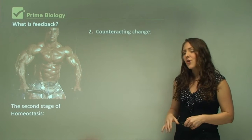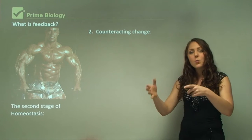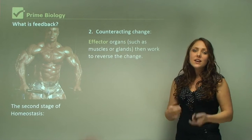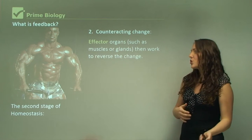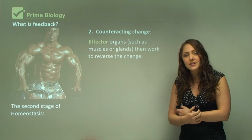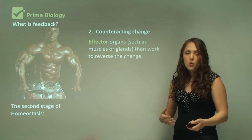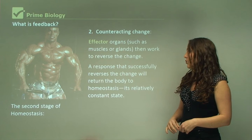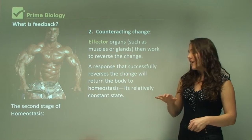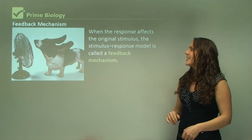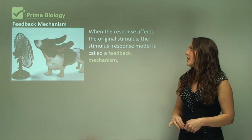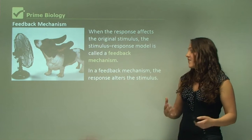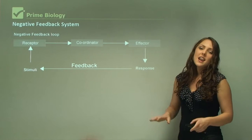The second stage of homeostasis is counteracting these changes. We have effector organs such as muscles or glands that work to reverse the change. Muscles contract and glands release chemicals or hormones to bring balance back to normal. A response that successfully reverses the change returns the body to homeostasis — its relatively constant state. When the response affects the original stimulus, this is called a feedback mechanism.